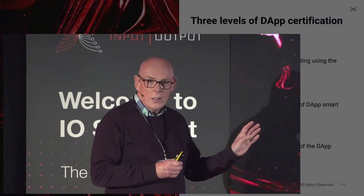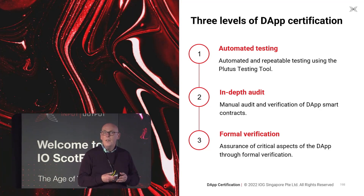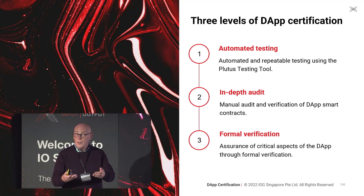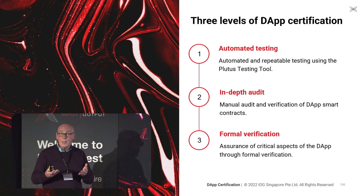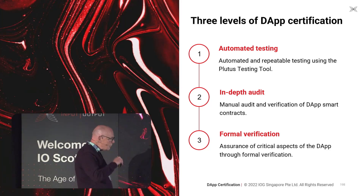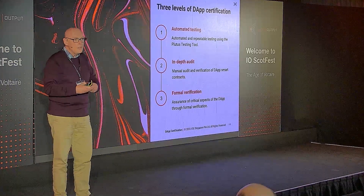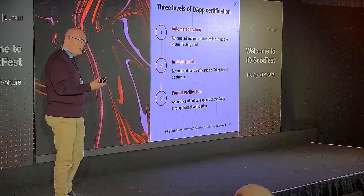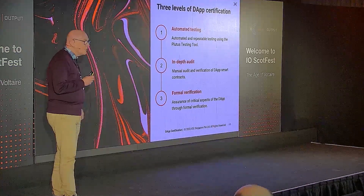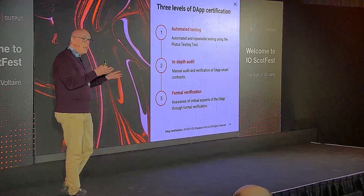Why do we call this certification? Because each of these things generates evidence. If you perform tests, you get the results of those tests back — that's evidence those tests have been passed, and you can read the results. In the case of an audit, you get an audit report, a 30–40 page PDF plus ancillary technical material. If you do difficult mathematical reasoning, you get a proof — like the proof of Pythagoras' theorem — and you can inspect it. In each case, you get evidence. The certification part is that we're advocating putting that evidence on blockchain, or at least making it accessible via the blockchain.